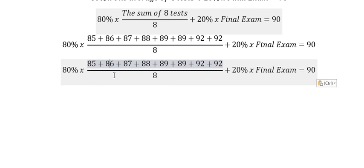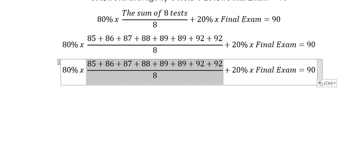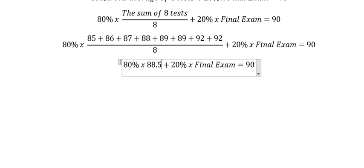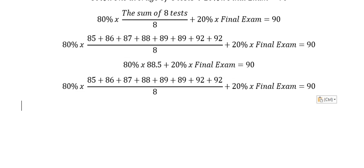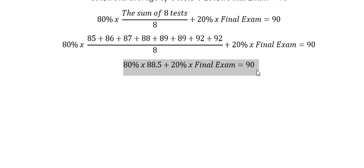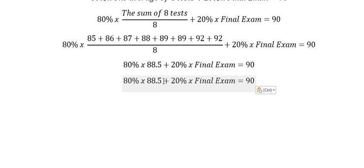So we got about 88.5. 88.5 multiplied by 80%, you will got about 70.8.